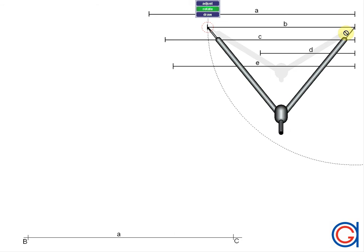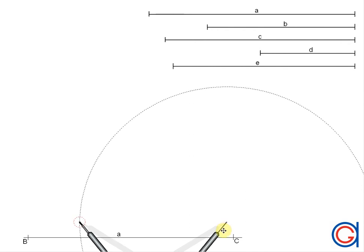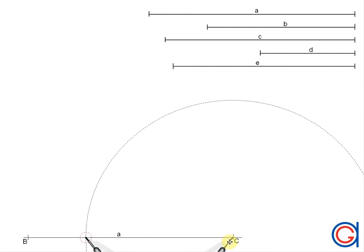To continue we are going to set our compass to the length of side B and now with this length we are going to set our compass on vertex C and draw an arc from the left to the right as can be seen here in the video.